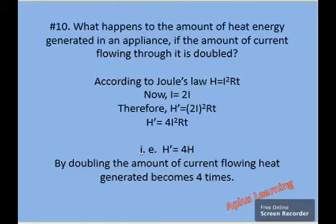And now, when we do the calculation, we have H dash is equal to 4I squared Rt. And we have already seen in the first step that I squared Rt is equal to H. So, H dash becomes 4H. That is, by doubling the amount of current flowing, heat generated becomes 4 times.